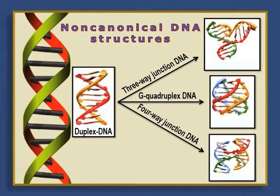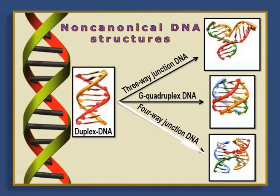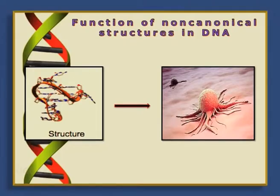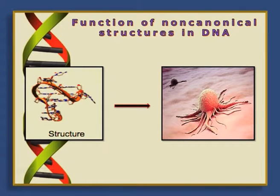Why is it important? The non-canonical DNA structure deviates from the duplex DNA, as shown in this diagram, to the three-way junction DNA, to the G-quadruplex DNA structure, to the four-way junction DNA. The function of this non-canonical DNA structure is that its presence sometimes leads to mutation, and this mutation results in neurodegenerative disorders or in very life-threatening diseases like cancer. So we should know how non-canonical structures of DNA are formed in vivo.